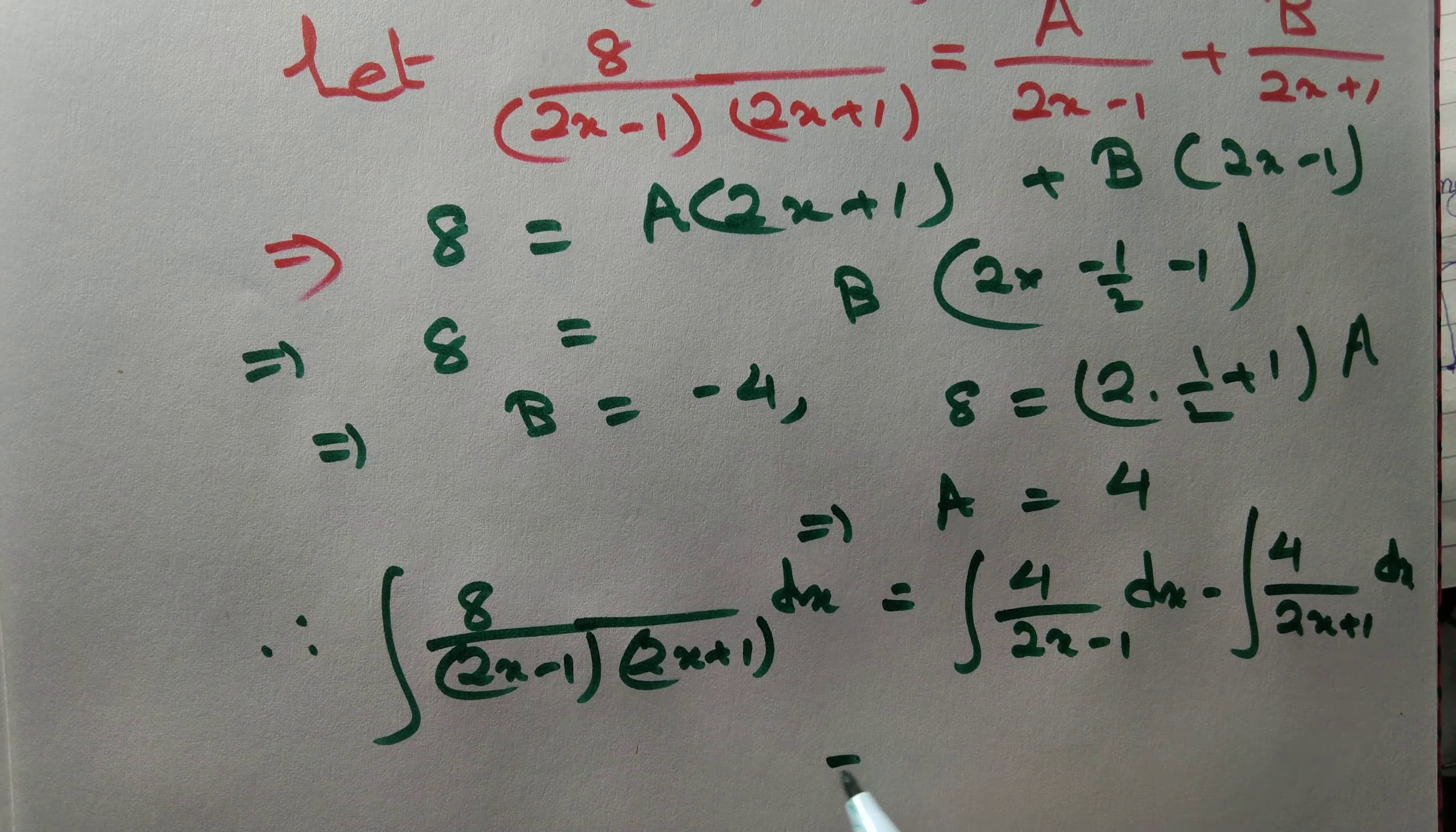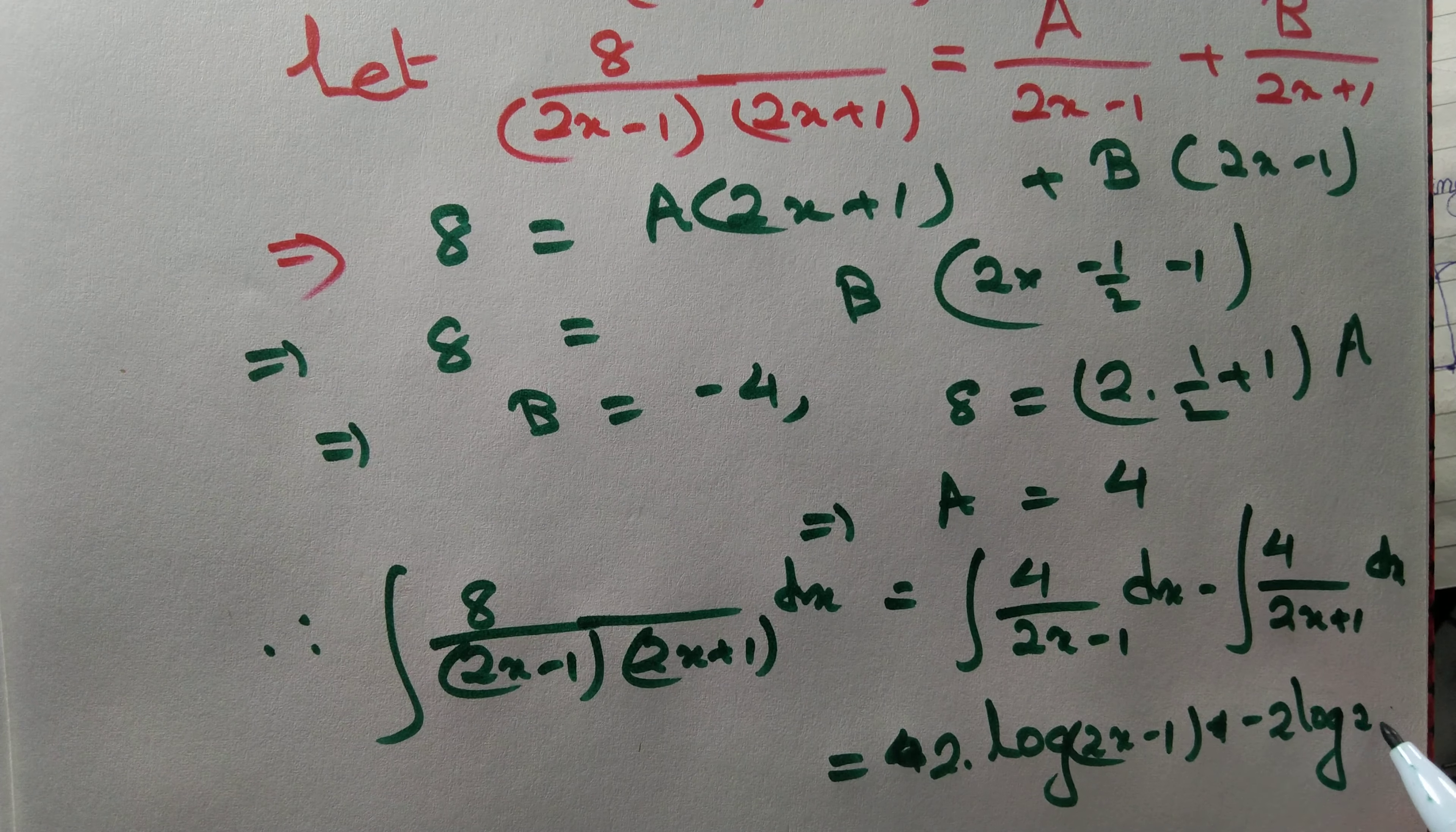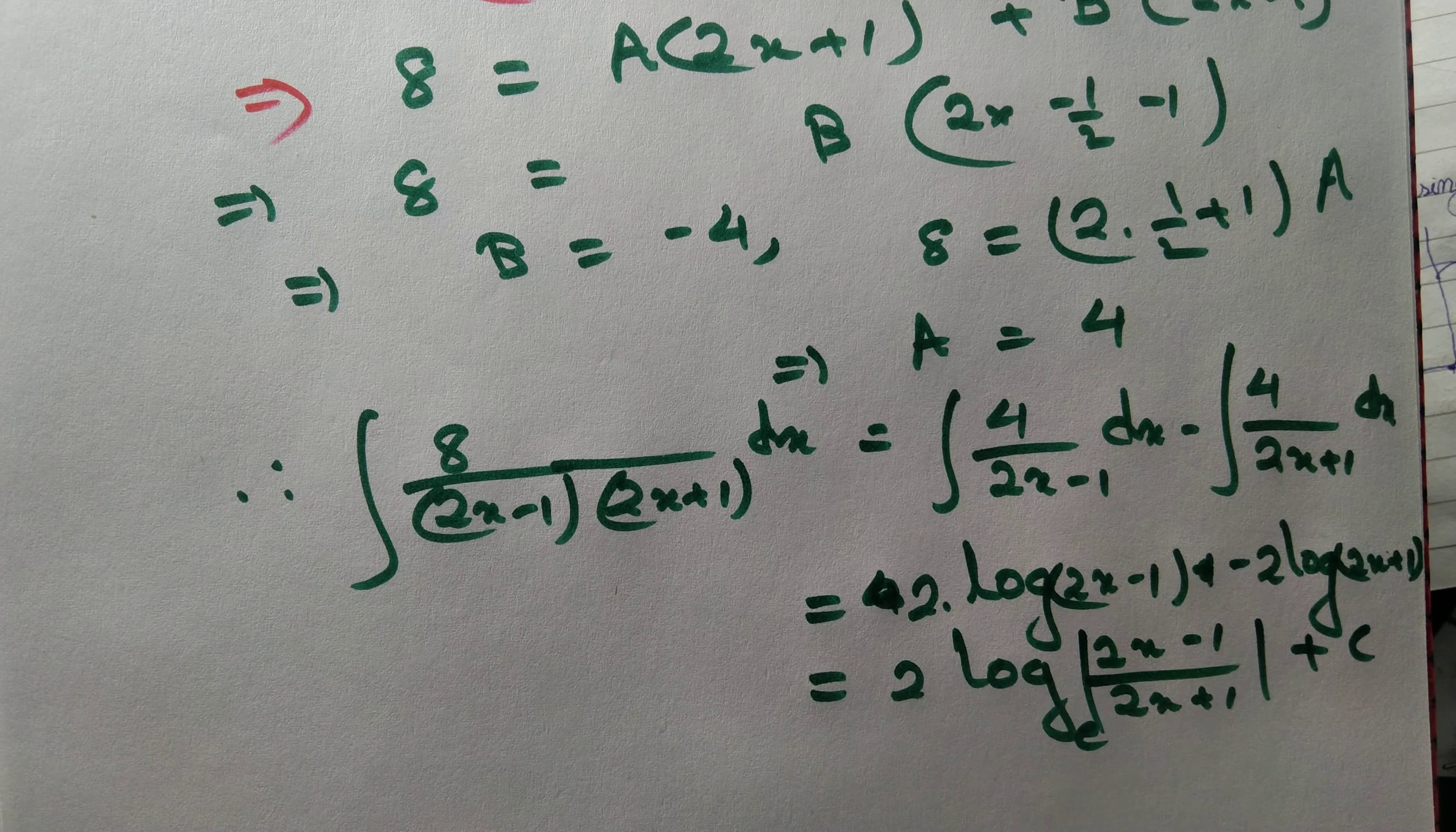That is equal to 2 into log of 2x minus 1 minus 2 into log of 2x plus 1. That is equal to 2 into log of 2x minus 1 by 2x plus 1 plus some constant of integration.